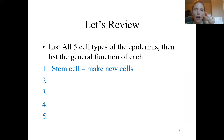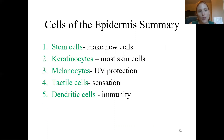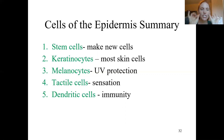To review all five cells of the epidermis: stem cells make more cells to repair and renew the skin; keratinocytes make up most of the skin's cellular structure; melanocytes provide UV protection by creating melanin; tactile cells handle touch sensation; and dendritic cells wander around engulfing pathogens as part of the immune system.